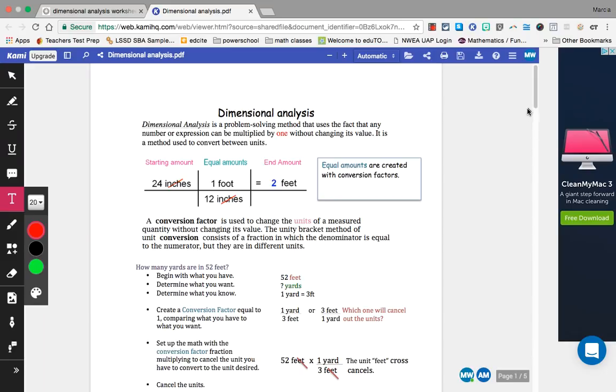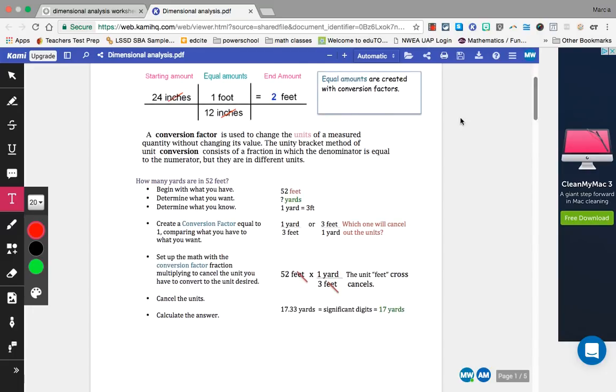If you look down here at the next example, it says how many yards are in 52 feet. So you begin with what you know. You know you have 52 feet, and then you try to determine what else you know. We know we have to get to yards. So something that you've learned in your past is that 1 yard is equal to 3 feet. The conversion factors possible with this knowledge is you could have 1 yard over 3 feet or you could have 3 feet over 1 yard.